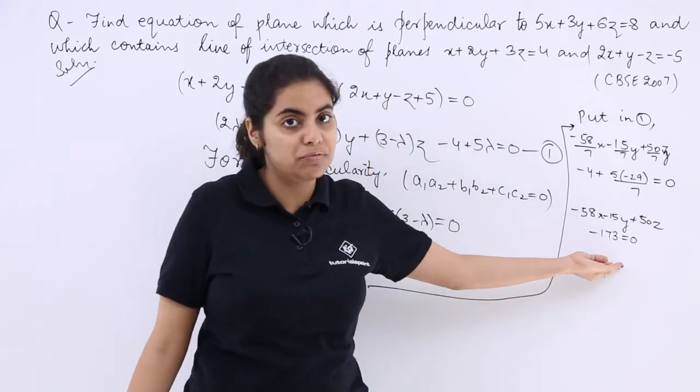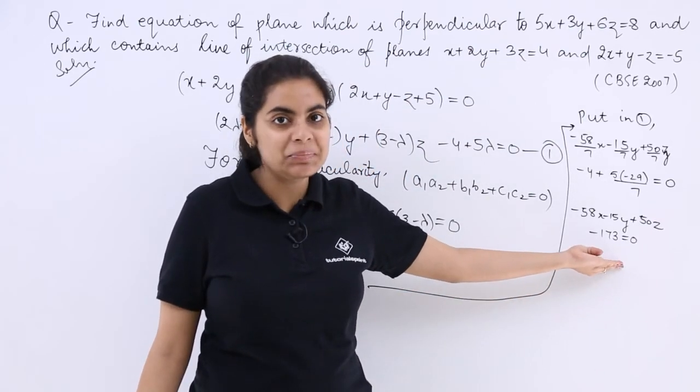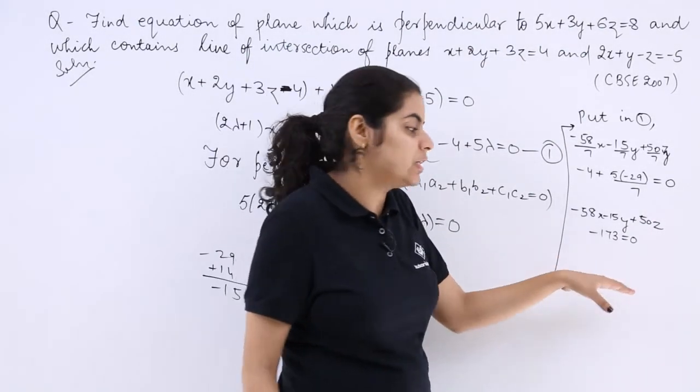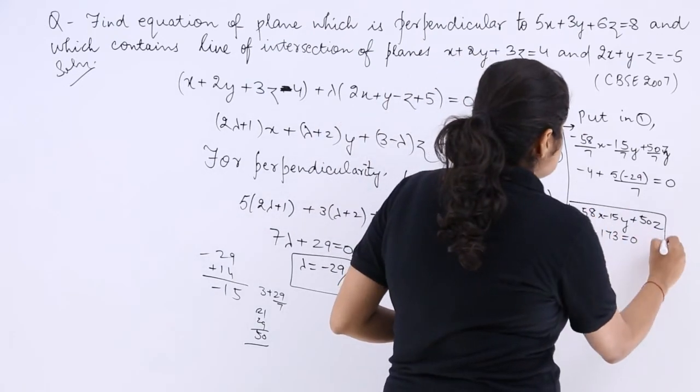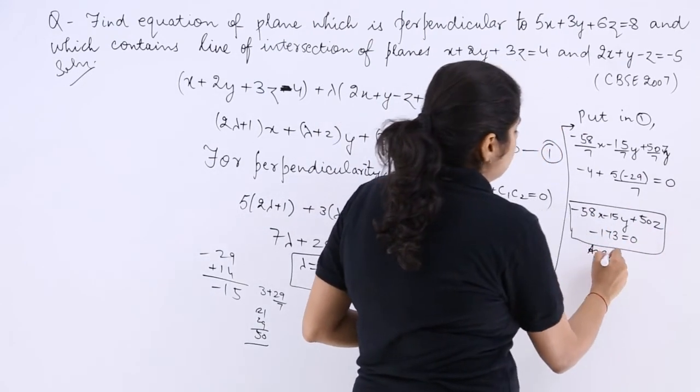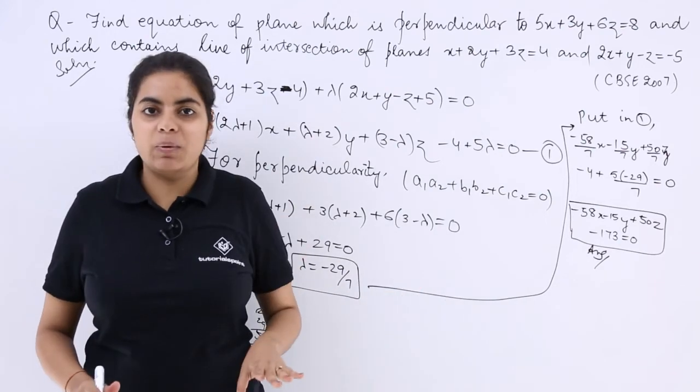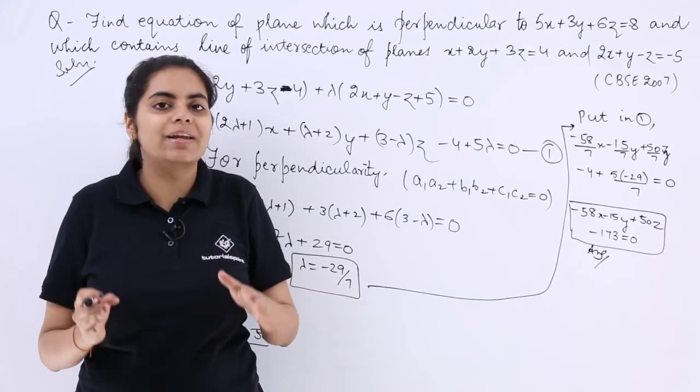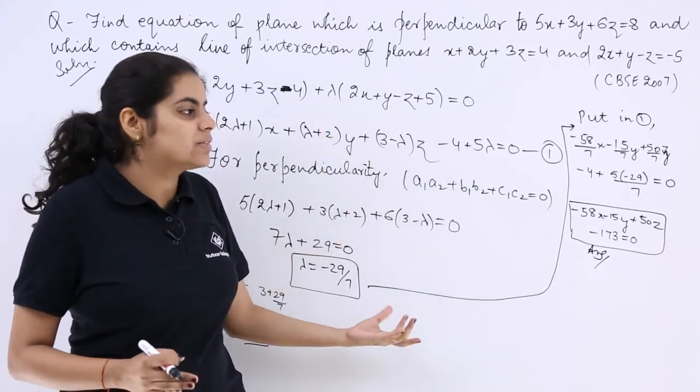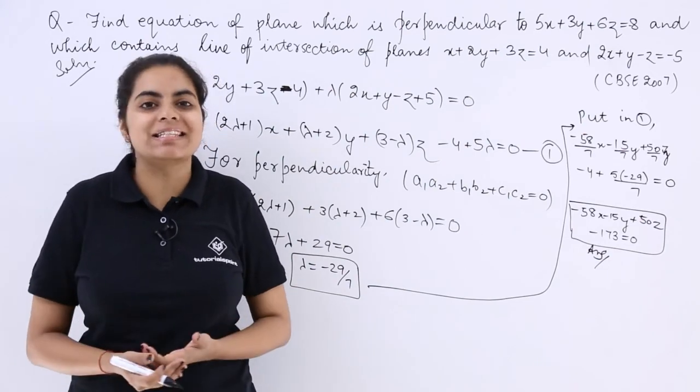It is either minus 173 or 153 that we will have to see. Yes, it is minus 173 is equal to 0. This is the required equation of a plane. A plane is very important to understand and this is the answer.